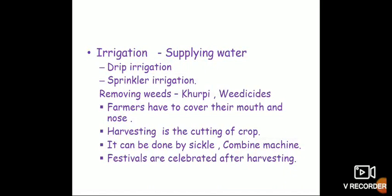The next step is irrigation — that is supplying water to the fields. We can get water from wells, ponds, and through motor pumps. Nowadays, all the farmers have set up a motor to take water from the wells. What are the traditional methods of irrigation? Pulley system, rahat, dhekli, and chain pump.